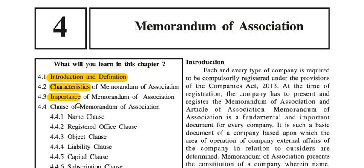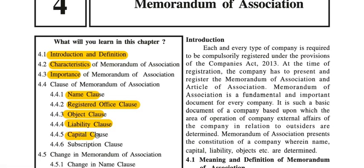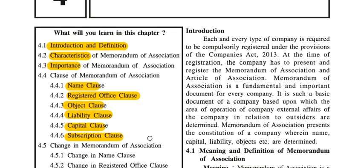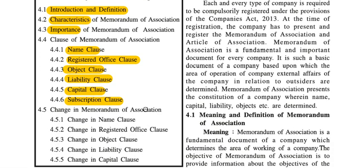We will see what are the clauses of MOA. First there will be the Name Clause, then Registered Office Clause, Object Clause, Liability Clause, Capital Clause, and Subscription Clause — there are 6 types of clauses. The last topic from the chapter is Changes in Memorandum of Association: how changes in the Name Clause, Registered Office Clause, Object Clause, Liability Clause, and Capital Clause can be done.